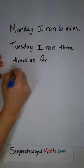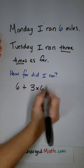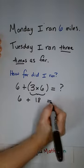I ran six miles on Monday and three times as far on Tuesday. So how far did I run? Six plus three times six is six plus 18, which is 24 miles.